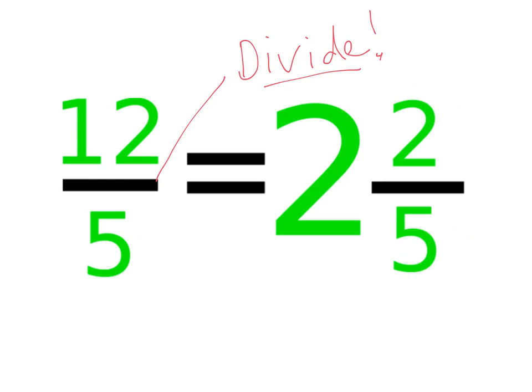How do we go from mixed numbers into top heavy fractions? In other words, how do we go this way? Well, all we would do in that case is we would try and think to ourselves: how many fifths is in two wholes? And the quickest way to do that is just to multiply.